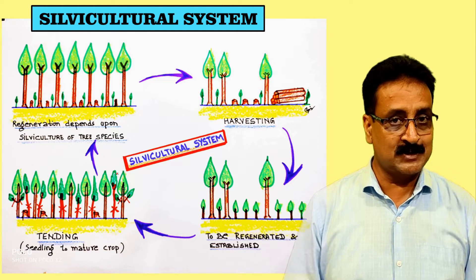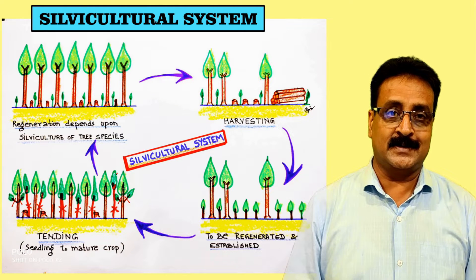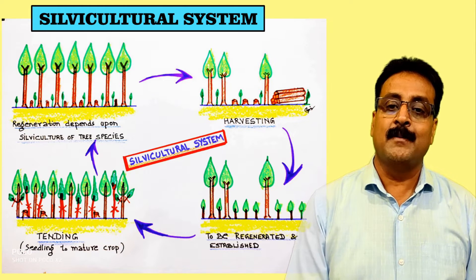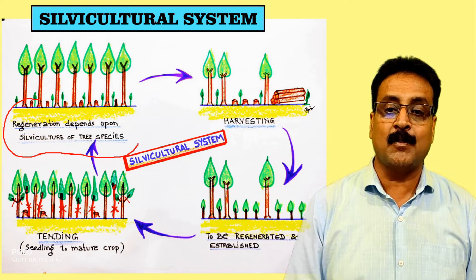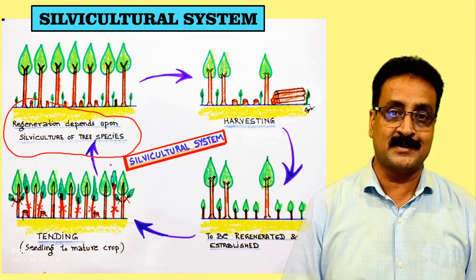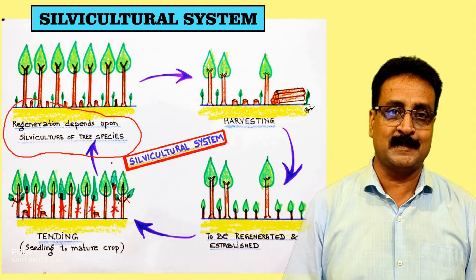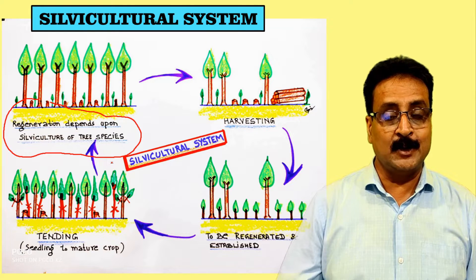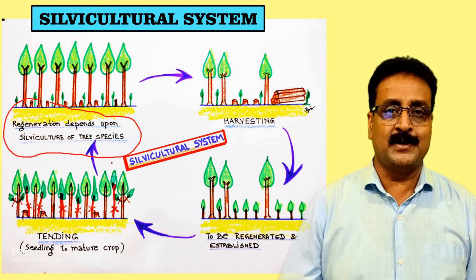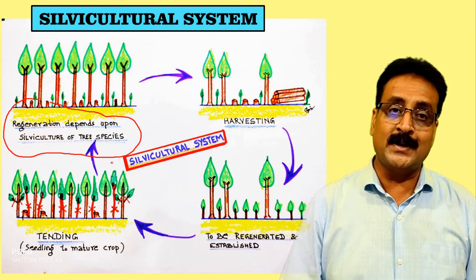Regeneration is important in all forestry operations because it depends upon the silviculture of the tree species — that is, the nature of the species. Some tree species require light to regenerate, some require a bit of shade, and some are shade demanders. We should know the actual nature of the tree species and how it could be regenerated.